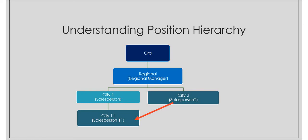In Dynamics CRM we have two types of hierarchy security: manager and position. Manager hierarchy has been discussed in my previous video. The challenge with manager hierarchy here is that City Two and City One-One are not in the same business unit hierarchy, so we need to opt for position hierarchy. Note that in an organization you can enable either position or manager security at a time — you cannot enable both simultaneously.